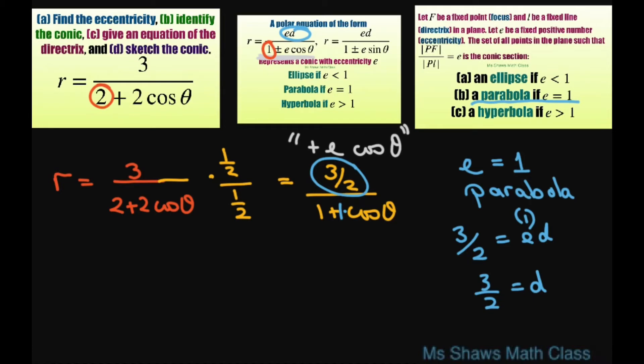Now, since we have cosine, this is to the right of the focus at the origin. We have x equals the fixed line directrix in the plane, and it equals 3 halves. Since it's positive, it's to the right of the focus at the origin.